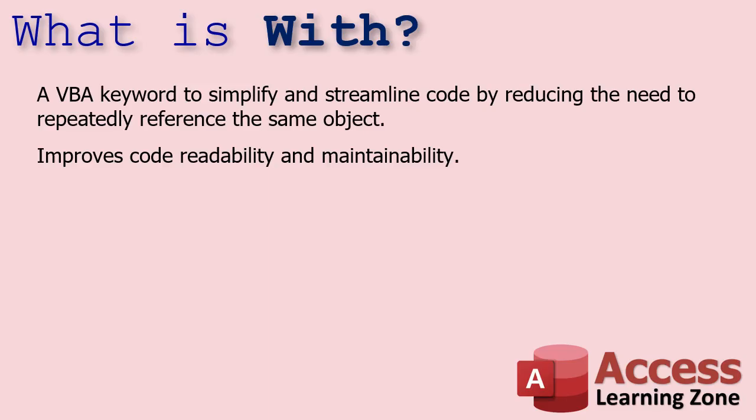What is With? With is a VBA keyword to simplify and streamline your code by reducing the need to repeatedly reference the same object. It improves your code readability and maintainability, and it makes it a whole lot easier to type.